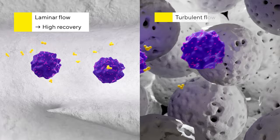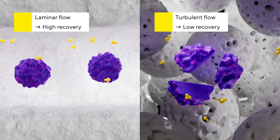In contrast, turbulent flow within the resin matrix can have a negative effect on fragile biomolecules due to shear stress.